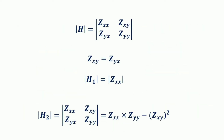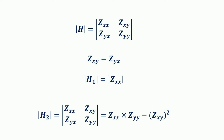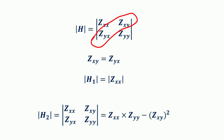A convenient test for this second order condition is the Hessian. The Hessian is the determinant composed of all second order partial derivatives, with the second order direct partial derivatives z_xx and z_yy on the principal diagonal, and the cross partial derivatives z_xy and z_yx on the off-principal diagonal, where z_xy = z_yx.